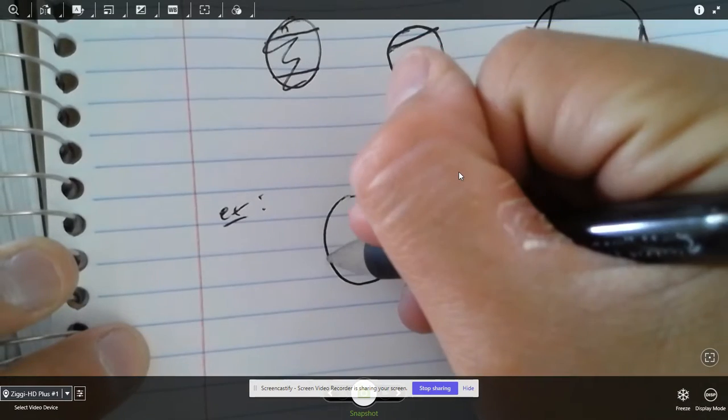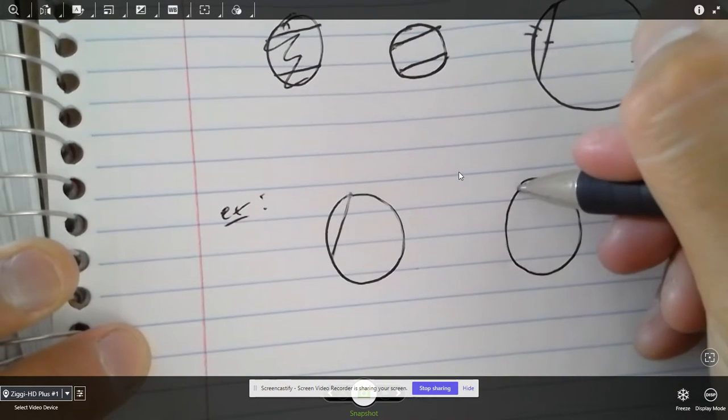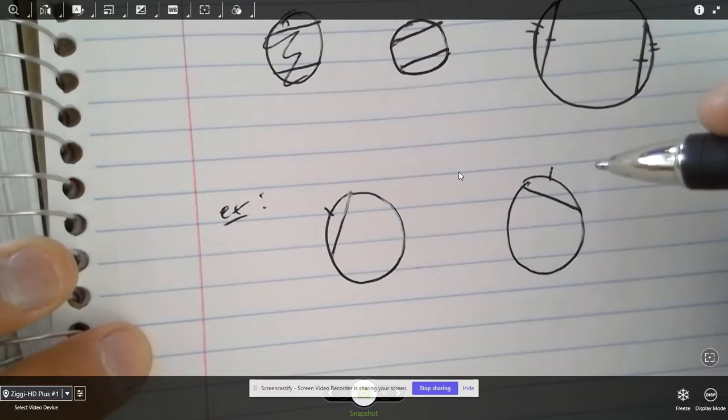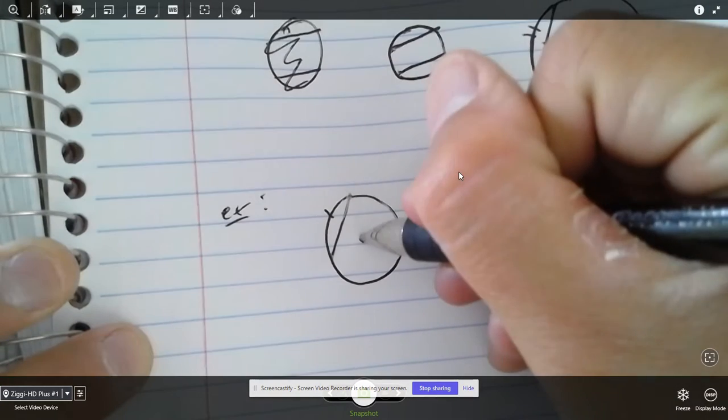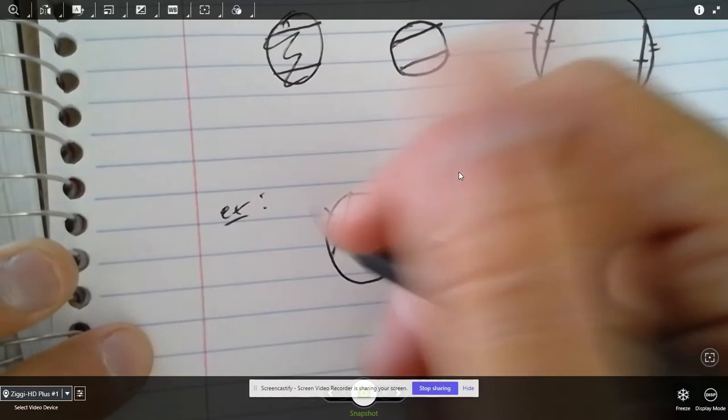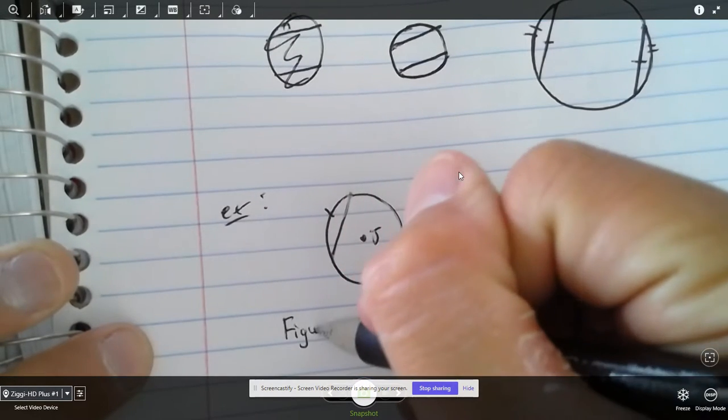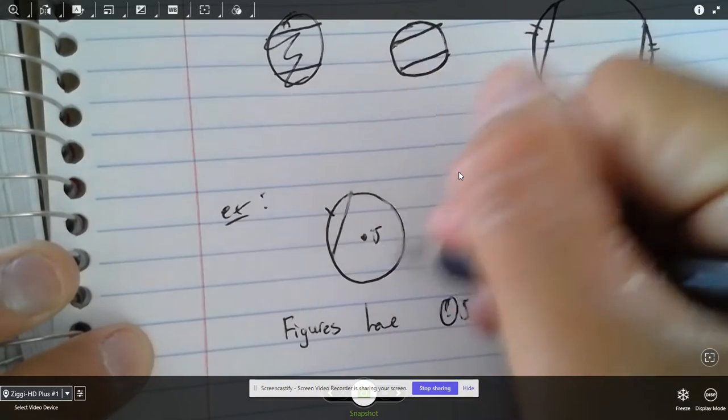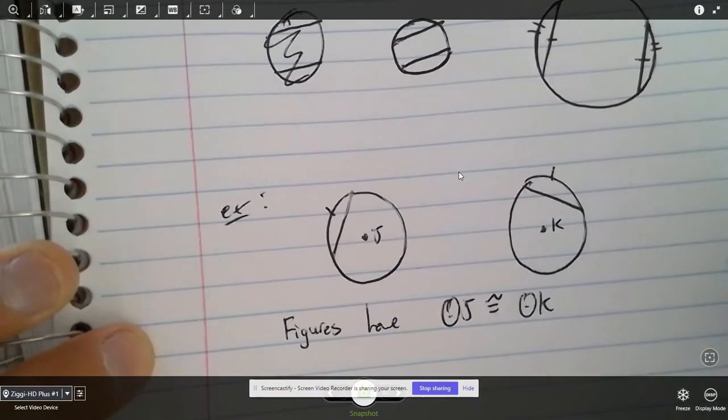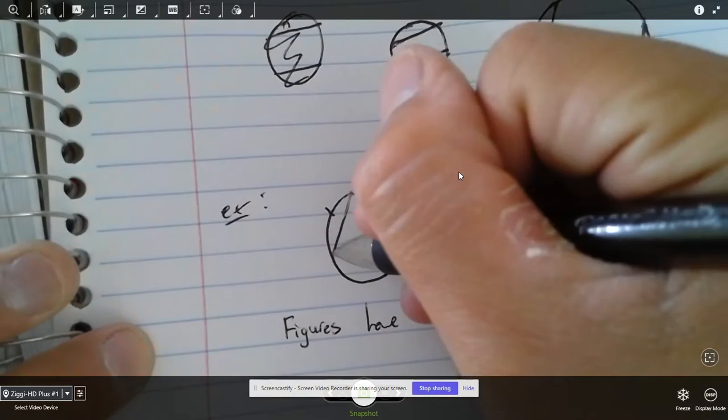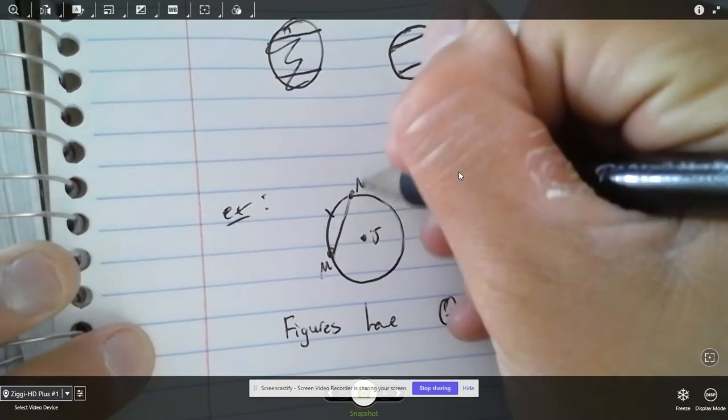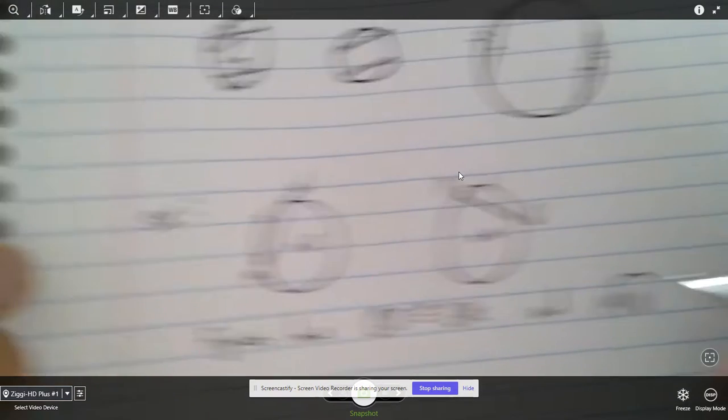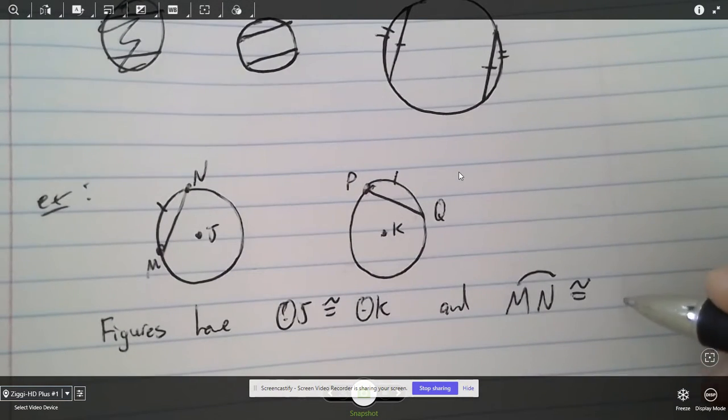Let's say that this chord and this chord right here are... Actually, let's say that the arcs are congruent. We know that only the arcs are congruent. And then this is circle J, and then this is circle K. So the only thing that's given to you is that circle J is congruent to circle K. So that means the overall circle is congruent to each other, right?